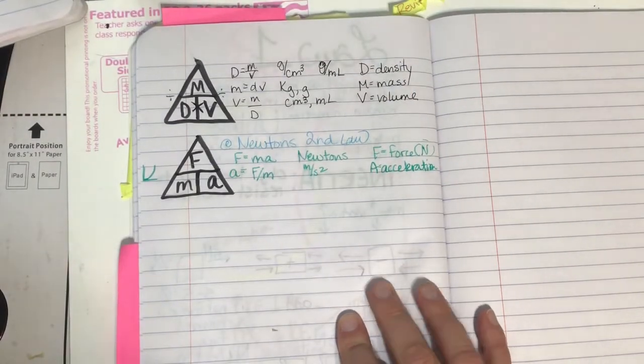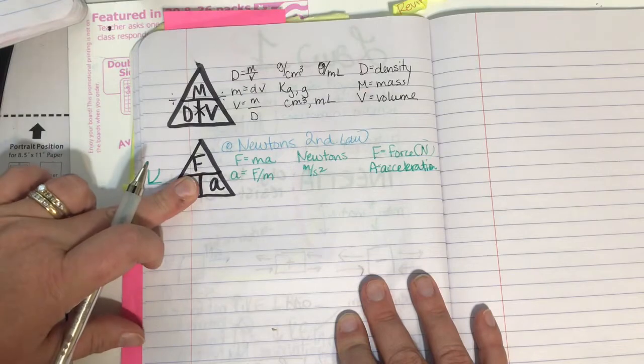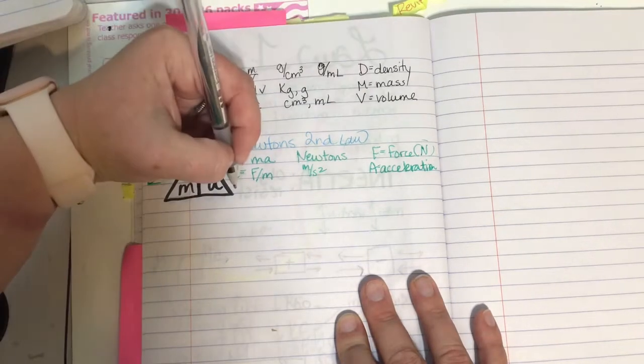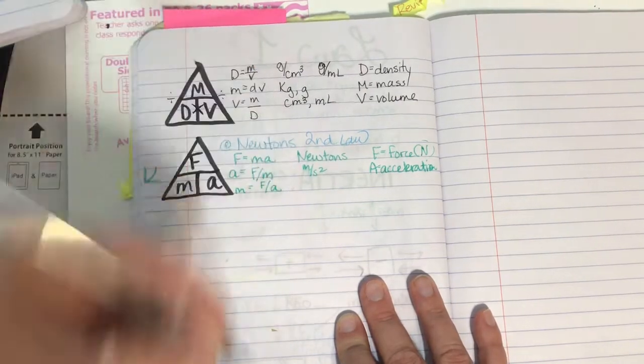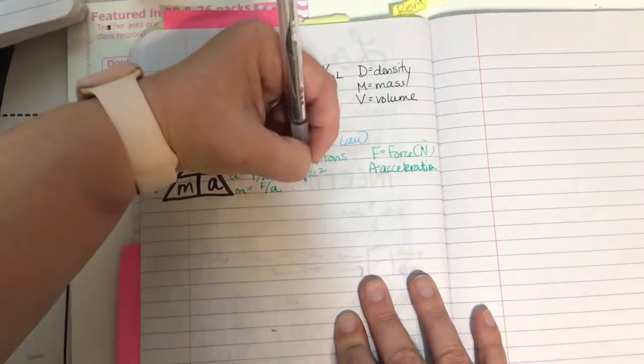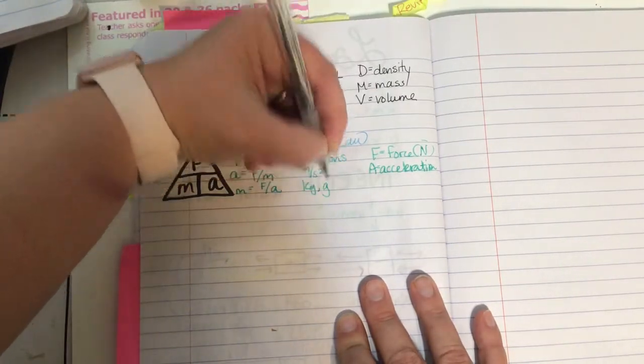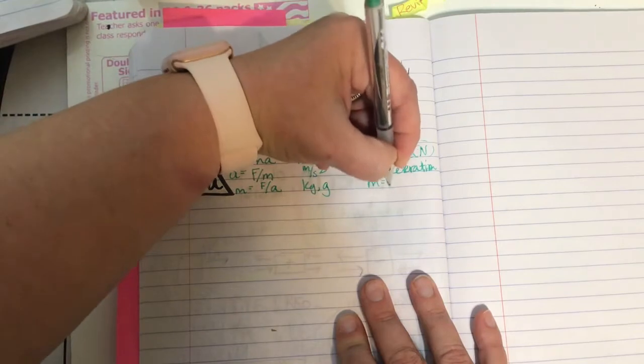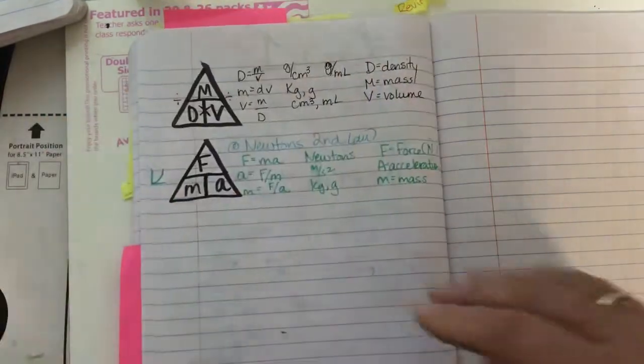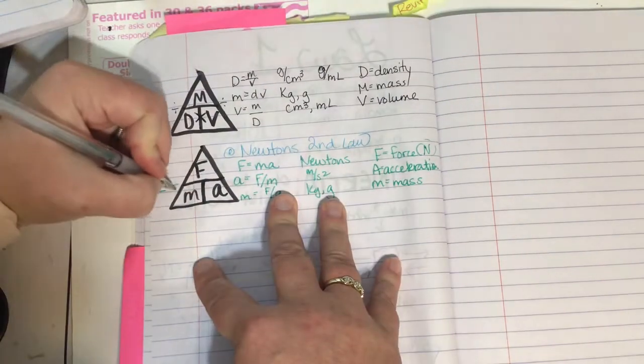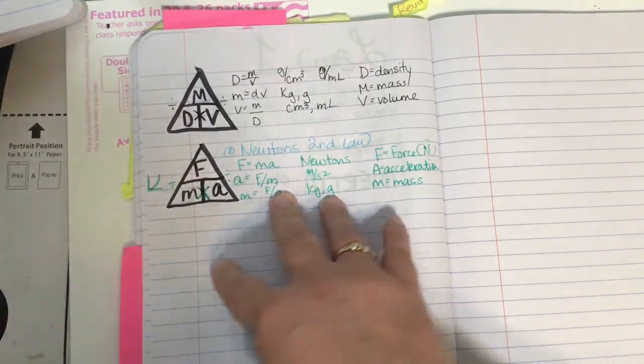And then the next one, mass. If I'm solving for mass, it's force divided by acceleration. So M equals F divided by A. Mass can be measured in kilograms, can be measured in grams. And my M here stands for mass. Again, above and below, I divide. Side by side, I multiply.